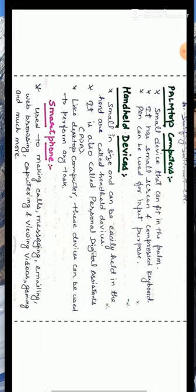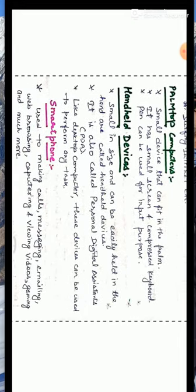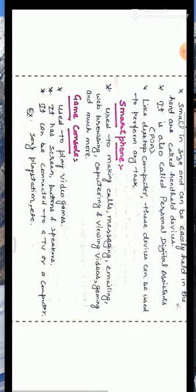The next microcomputer is handheld devices, which are also called personal digital assistants or PDA. These are small-sized devices which can be easily held in the hand. Different types of handheld devices include the smartphone. A smartphone contains features of a personal computer and can be used for making and receiving calls, text messaging, emailing, web browsing, video, gaming, and much more.